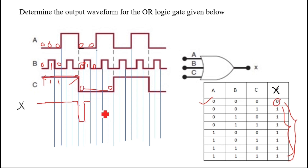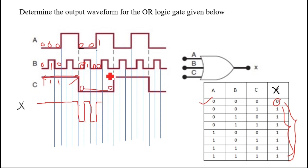Now B has become 0 for the next pulse and A is also 0, so output will again become 0. For the next pulse, C is 0, B is 0 — check A: A is 1, so output becomes 1. Now B is 1, so output remains 1. B has become 0 here but A is still 1, so output remains 1.